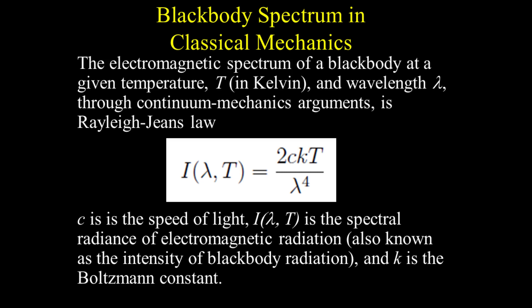Here we talk about blackbody spectrum in classical mechanics. At a given temperature T in Kelvin and a given wavelength lambda, and by using continuum mechanics arguments, the electromagnetic spectrum of a blackbody is given by Rayleigh-Jean's law. C is the speed of light. I is the spectral radiance of electromagnetic radiation, also known as the intensity of blackbody radiation. And K is the Boltzmann constant.